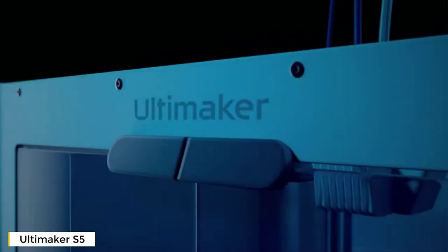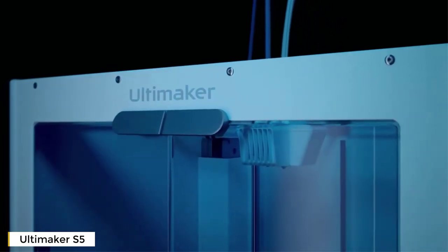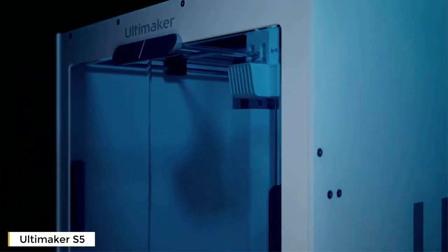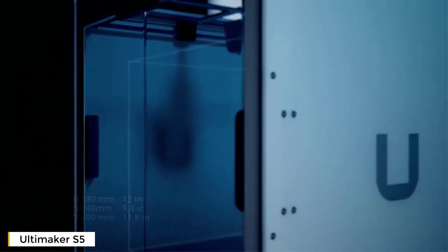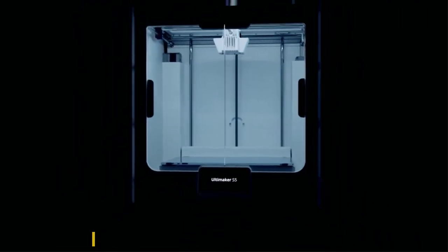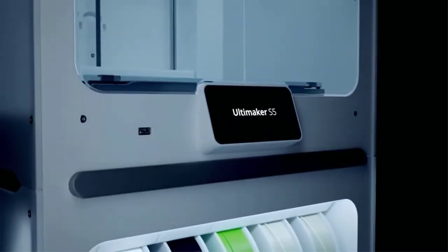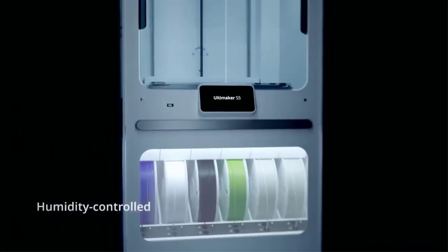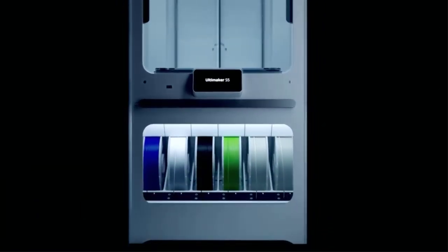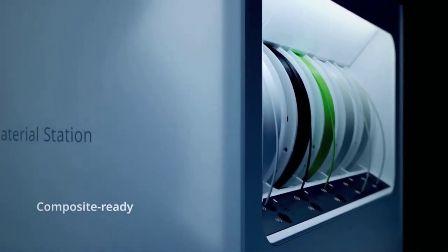Introducing the Ultimaker S5 Pro Bundle, a combination of products that together solve your every material handling concern. At its core is our market-leading high build volume 3D printer, the Ultimaker S5. This stands securely on the material station, the first of its kind in the world. A humidity-controlled enclosure enables continuous single or dual extrusion, housing up to 4.5 kilograms of any filament, including glass or carbon fiber composites.